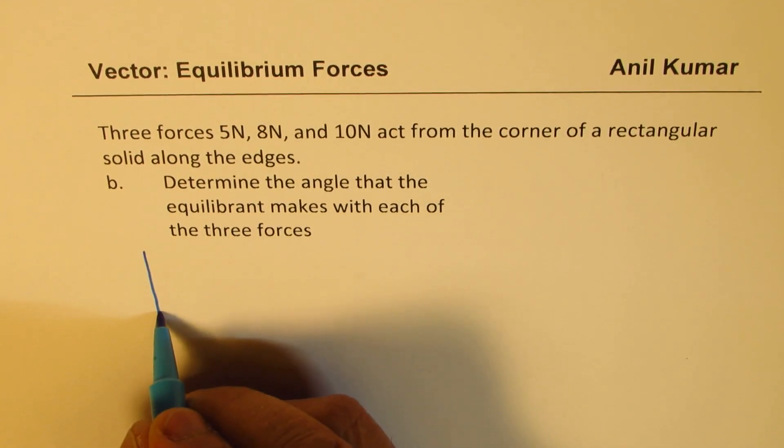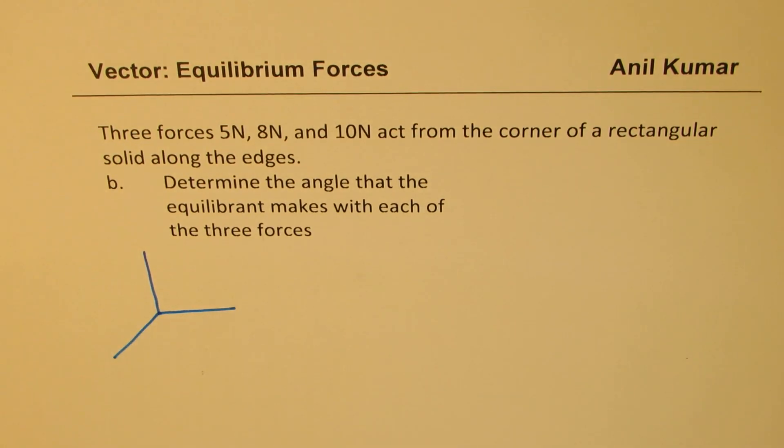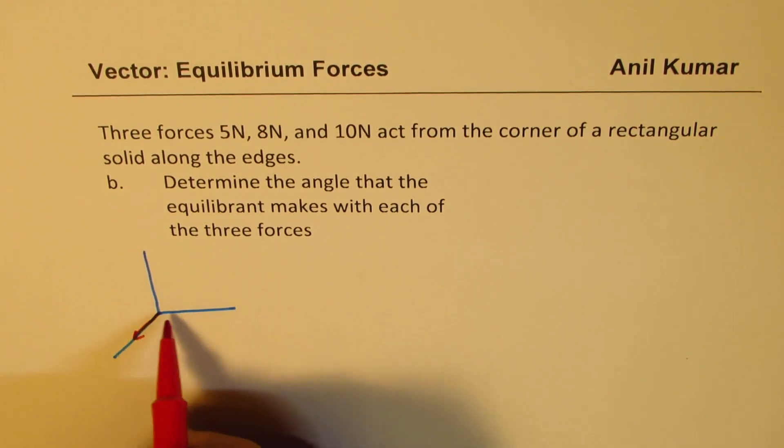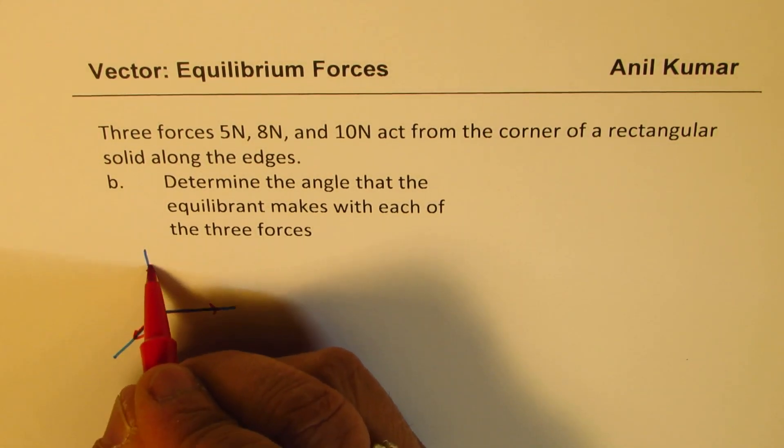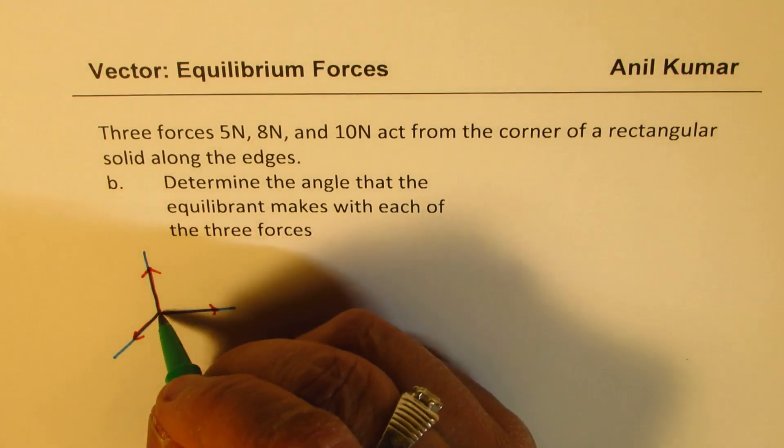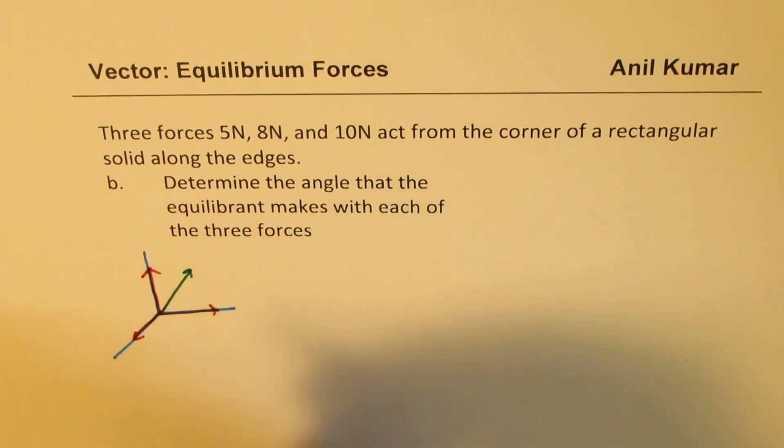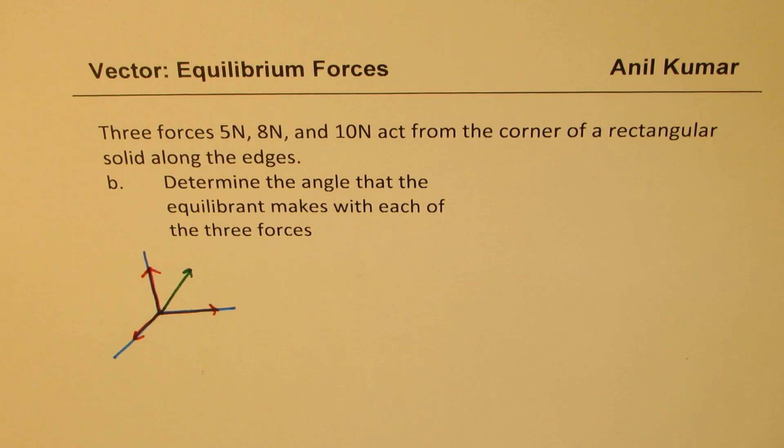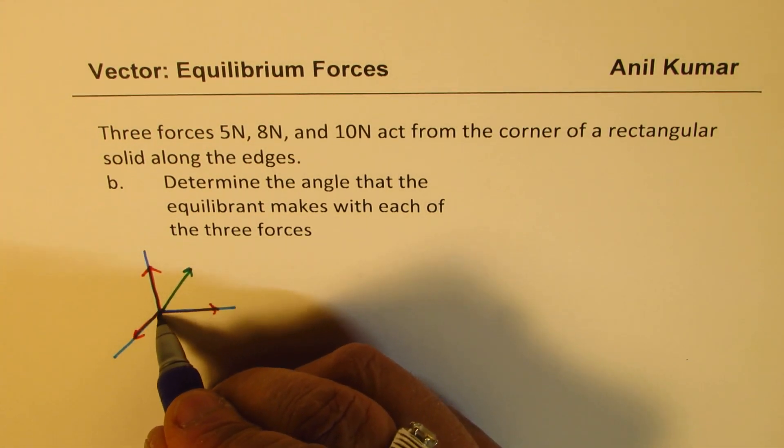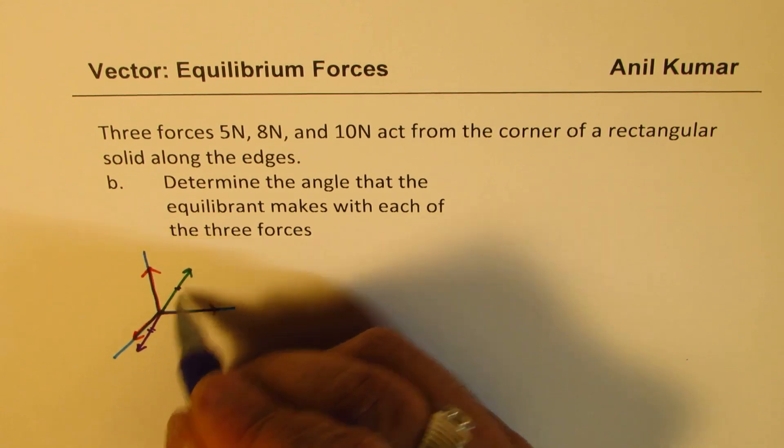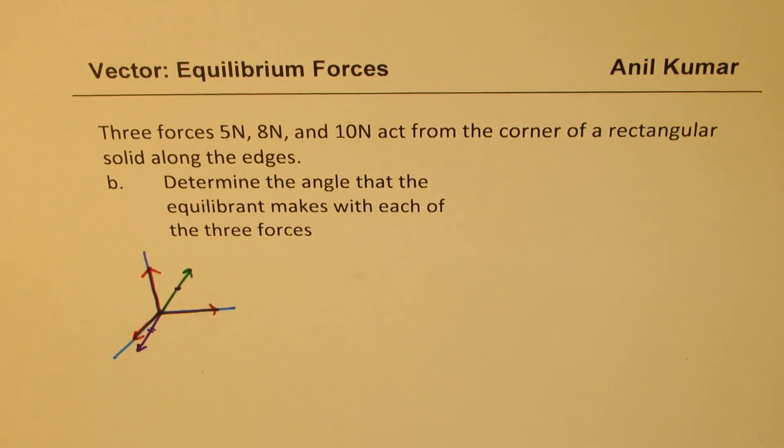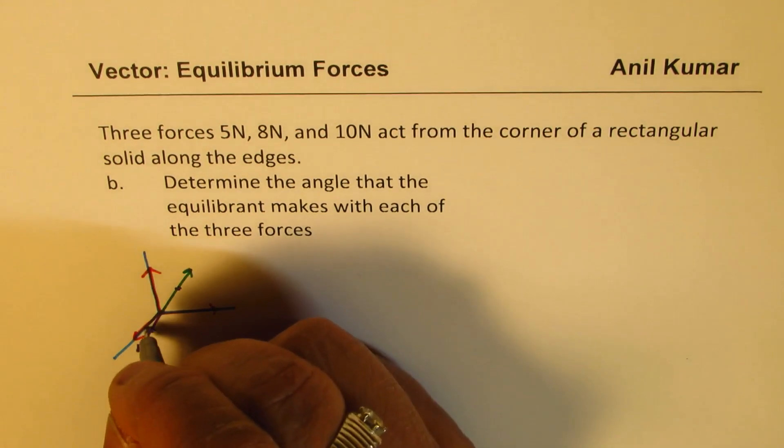So let me sketch it again here and then we'll figure it out. The three forces 5, 8 and 10 newtons and the equilibrant force which you learned just now should be acting right opposite to it and it has the same magnitude. So what we'll now do is we'll find the angle which this force makes with x, y and z axis.